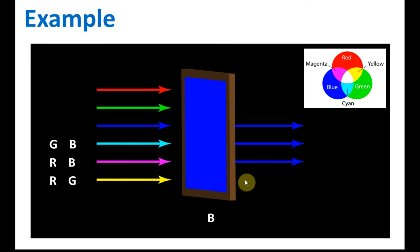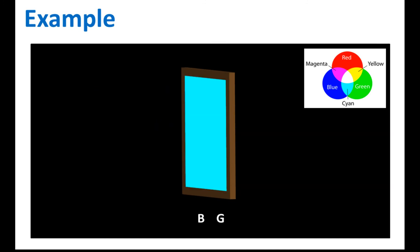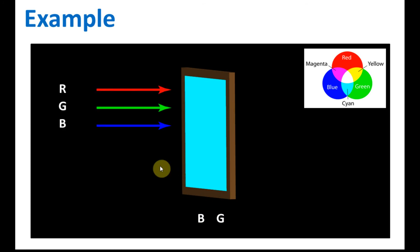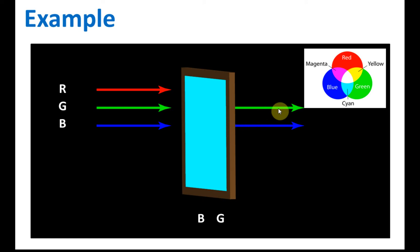Yellow is a combination of red and green, and both will be blocked, so no light comes out. Now, what about a filter with a secondary color, like a cyan filter? Cyan is the combination of blue and green.